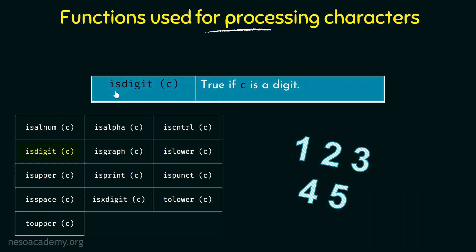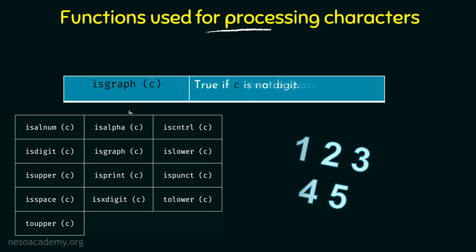Next we have ISDIGIT, which checks if C is a digit or not. It returns true if C is a digit — that means if it is a number or a numeric value — and false otherwise.